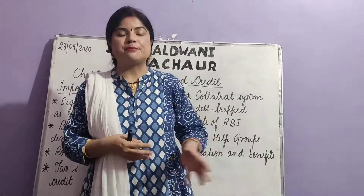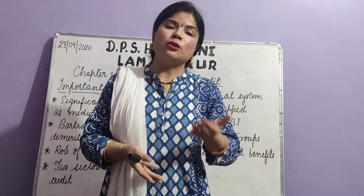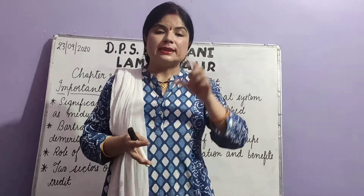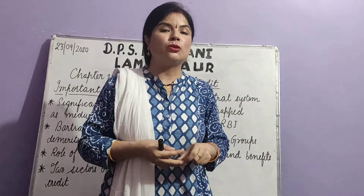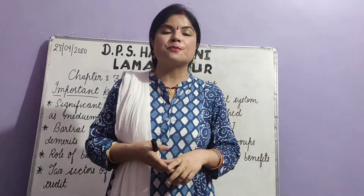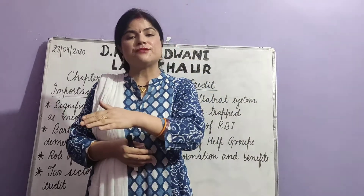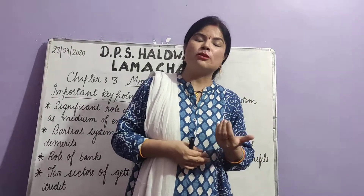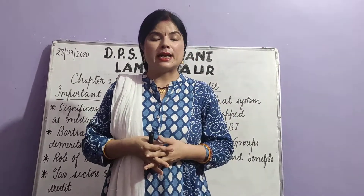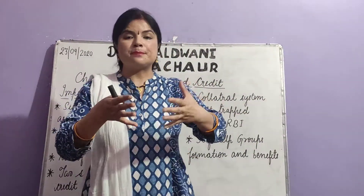Next key point: debt-trapped. Mostly poor people face this problem. They take a loan first and then become unable to repay it — that situation of becoming unable to repay a loan is called debt-trapped. Especially when poor people take money from money lenders or rich merchants, they are cheated easily. Whatever amount is given to them as a loan, at the time of repayment the lenders charge more than that amount, and these poor people become unable to repay, facing the situation of debt-trapped.